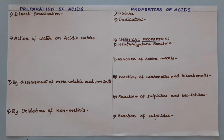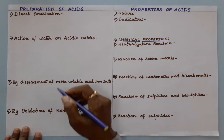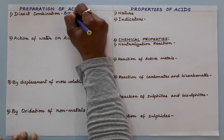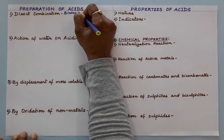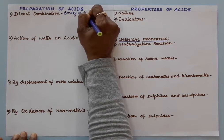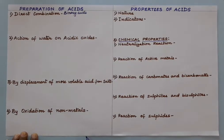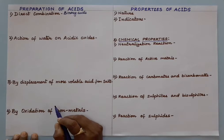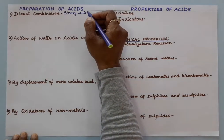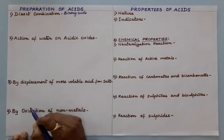Hello students. We will study preparation of acid and properties of acids. There are four general methods to prepare acid. The first method is direct combination, and by direct combination we can prepare binary acids. Binary acids means containing two elements, and these binary acids are prepared by this method of direct combination.